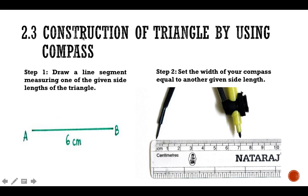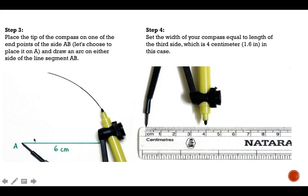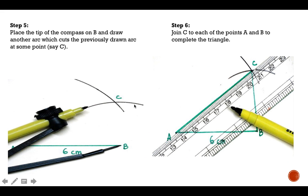Now we come to the construction of a triangle using a compass. First, draw line segment AB of six centimeters. Then set your compass to seven centimeters and draw an arc from point A. Then measure four centimeters and from point B, cut an arc to find point C. Join A to C and B to C, and your triangle is complete.